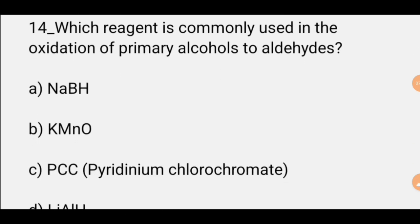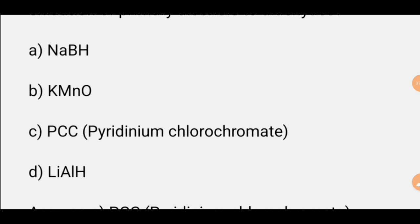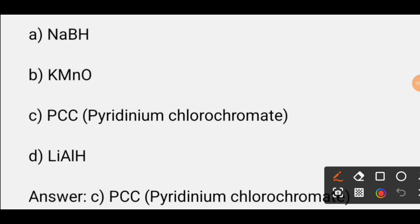MCQ number fourteen: Which reagent is commonly used in oxidation of primary alcohol to aldehyde? For primary alcohol oxidation to aldehyde, we use PCC, pyridinium chlorochromate. Option C is the answer.